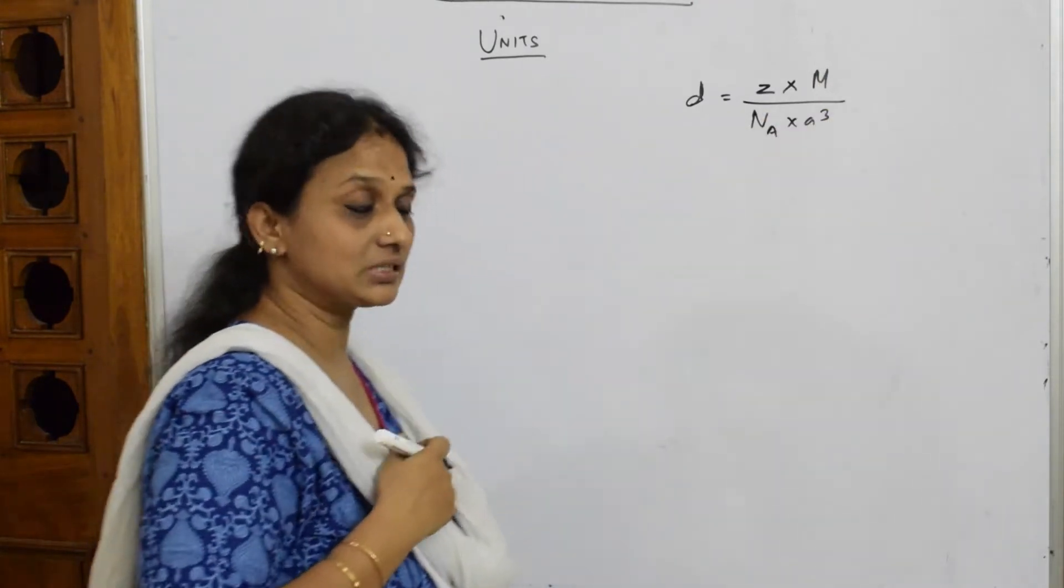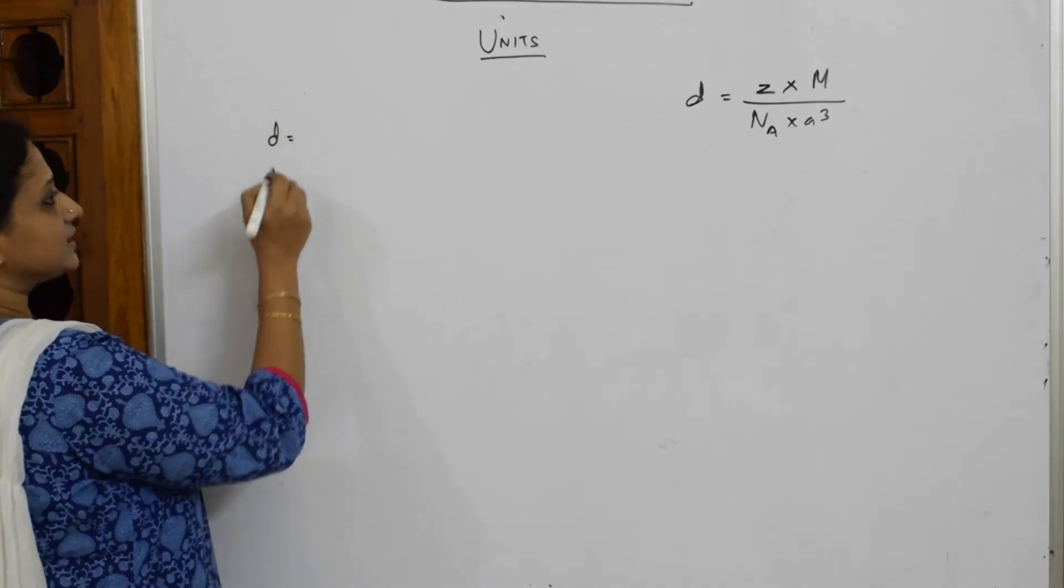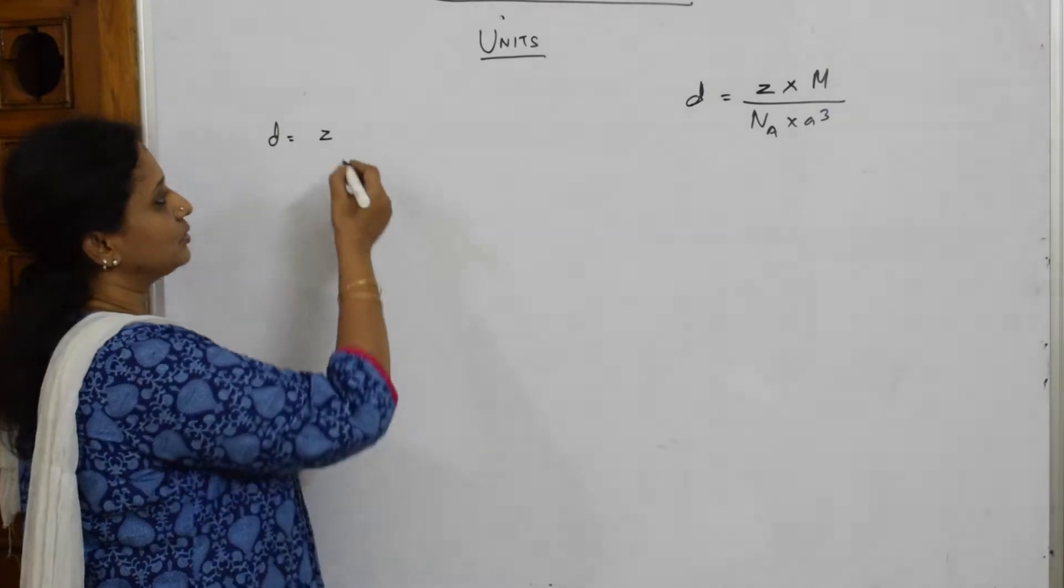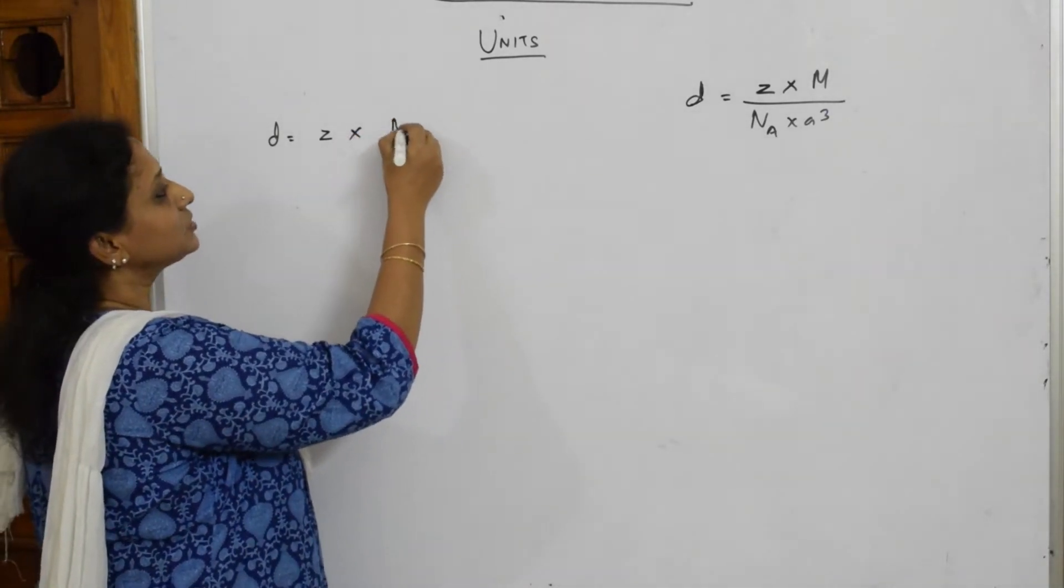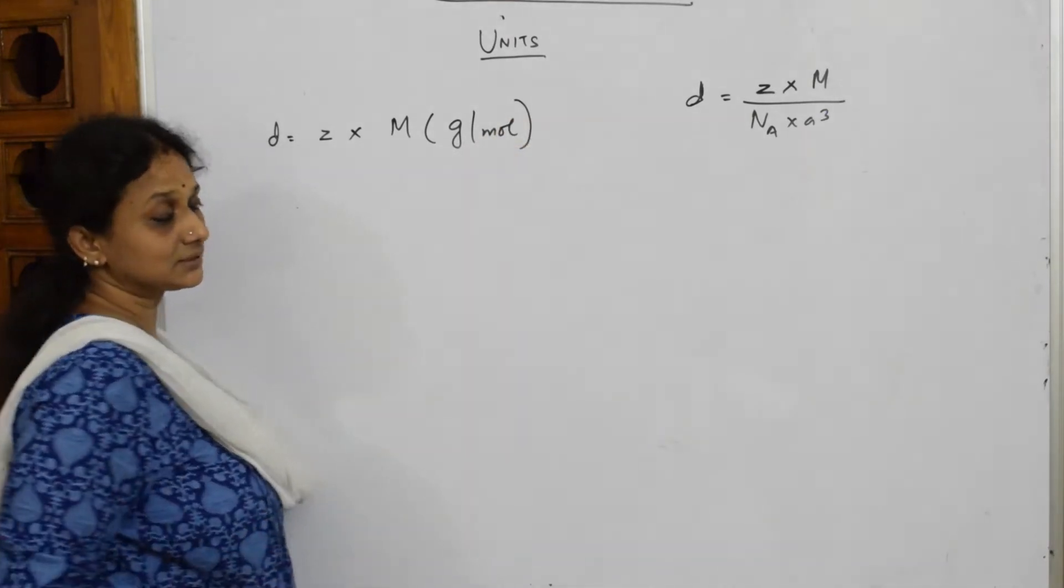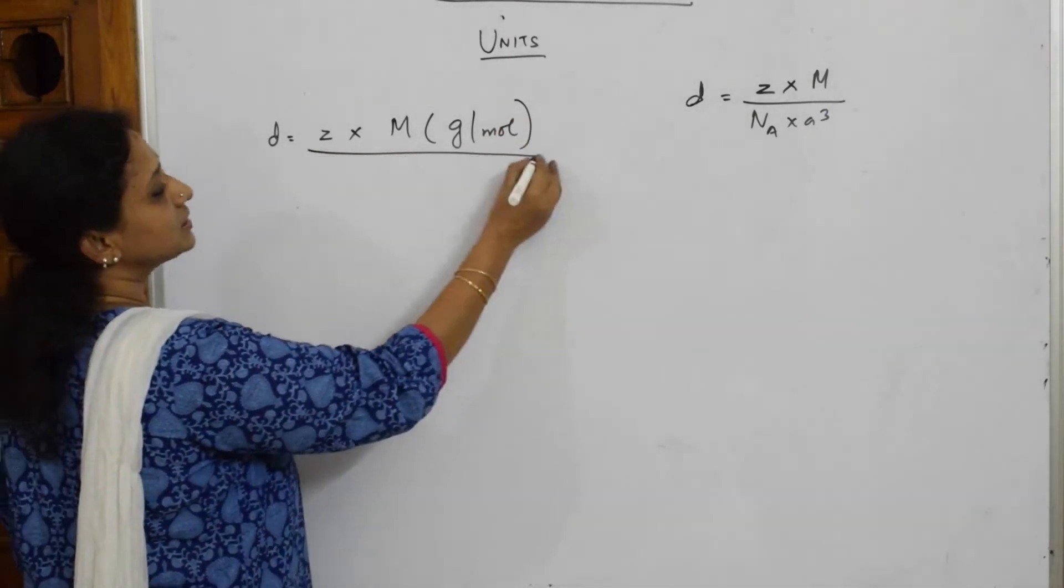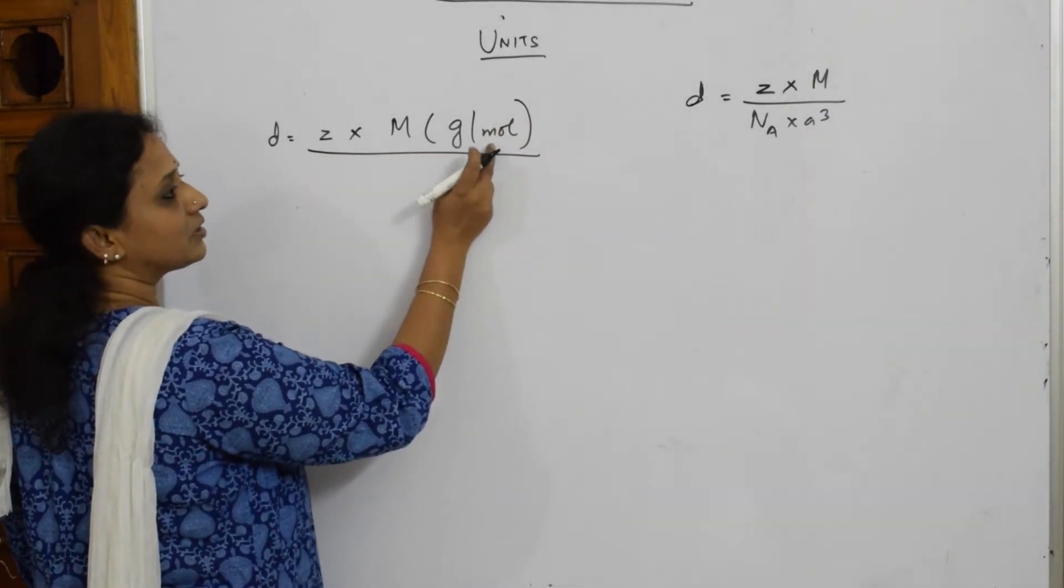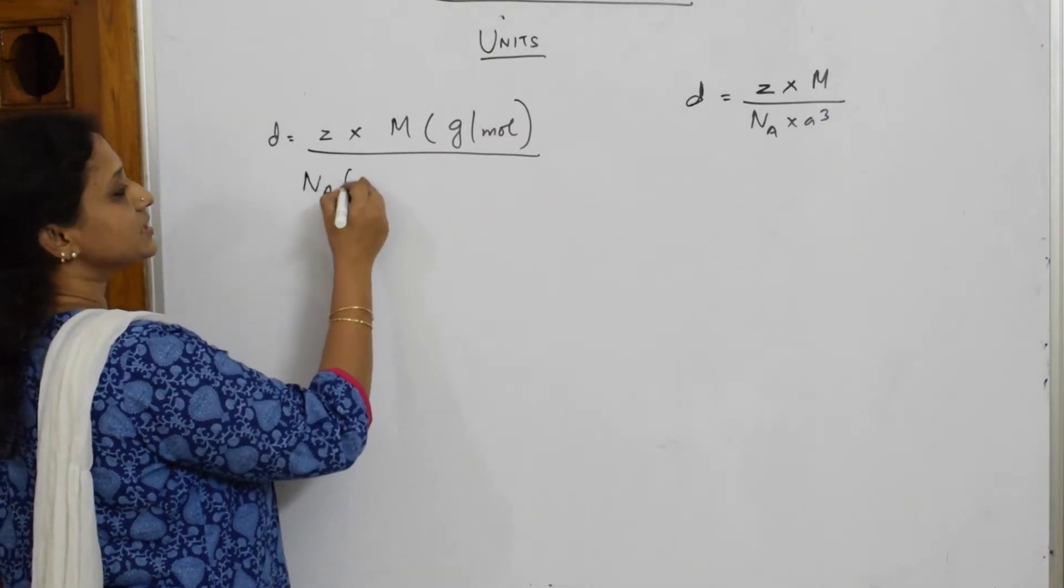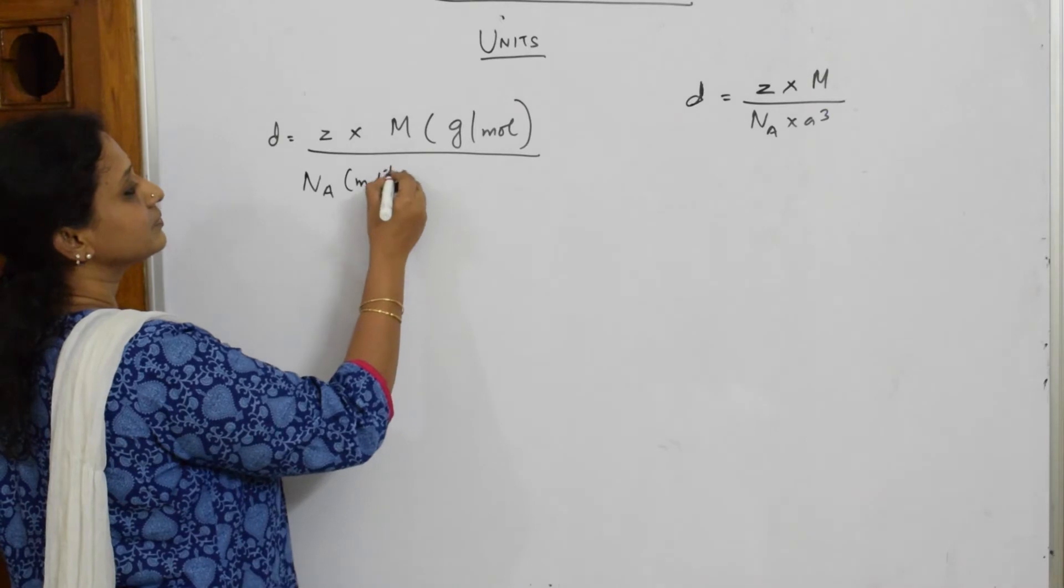Let us learn the units how to write. So density, if I speak Z, number of atoms can be 4, 1 or 2. Molecular mass is always represented by gram per mole. And Avogadro's number NA is always represented in mole inverse.